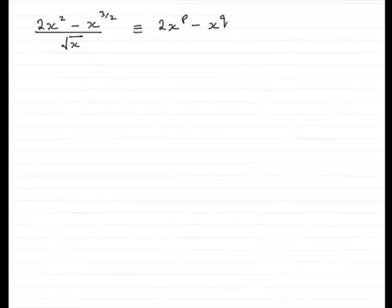Okay, so in this part of the question, we're given that 2x squared minus x to the power 3 over 2, all divided by the square root of x, can be written in this particular format: 2x to the power p minus x to the power q. I've written it to show that it can be identical to this expression.